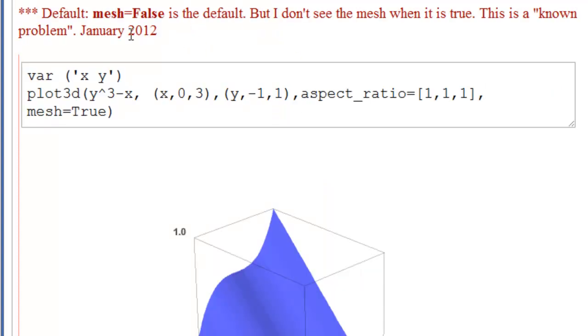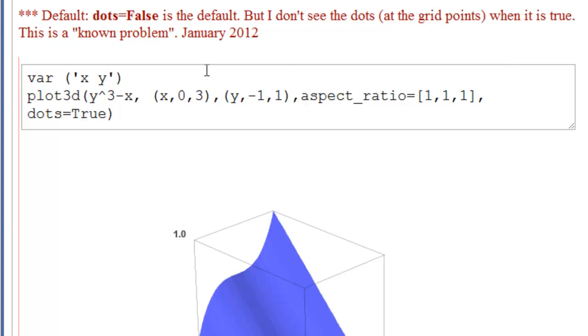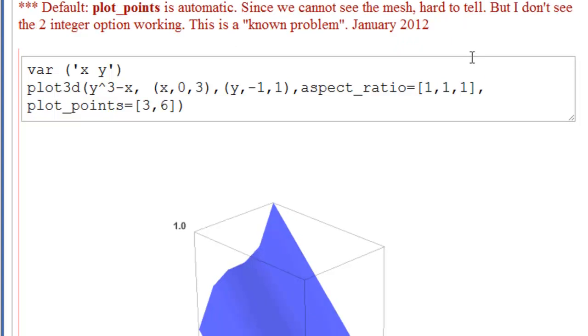Just want to point out that mesh equal to false is the default, but mesh equal to true does not work. Similarly, dots equal to false is the default, but if you put in dots equal to true, you will still not see the dots at the grid points. And the third thing that wasn't working is plot points. It's automatic. It's hard to tell if it's working because you can't see the mesh, but as I understand it, this is also a known problem that it does not work.